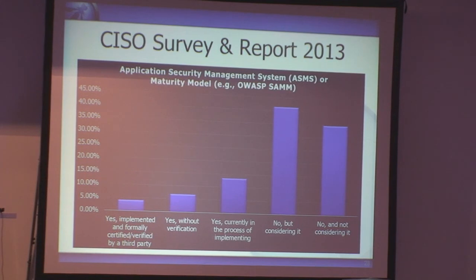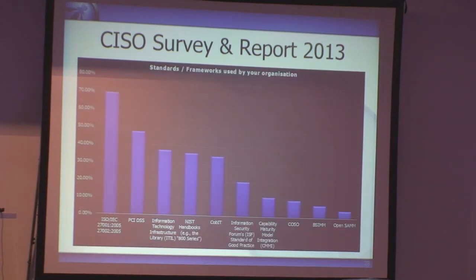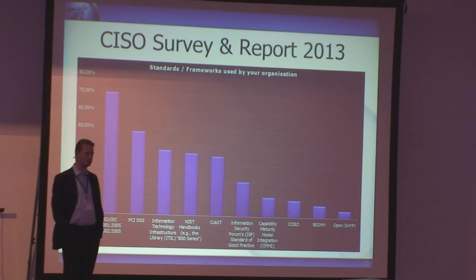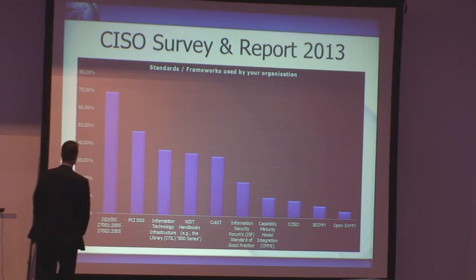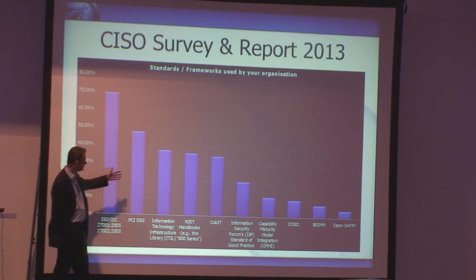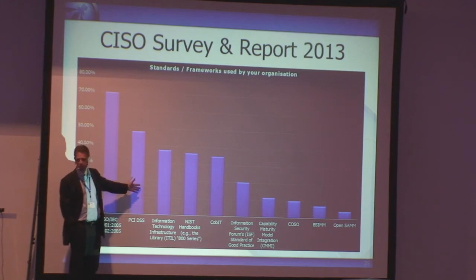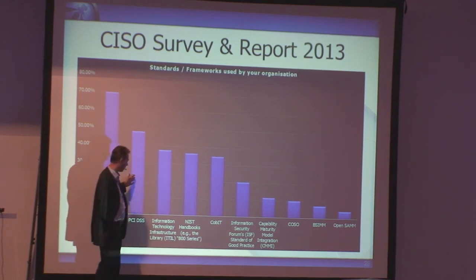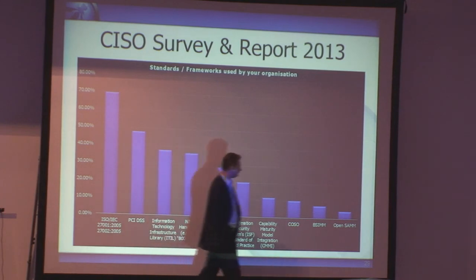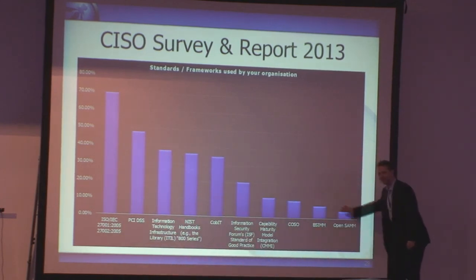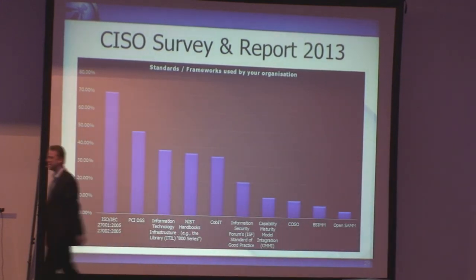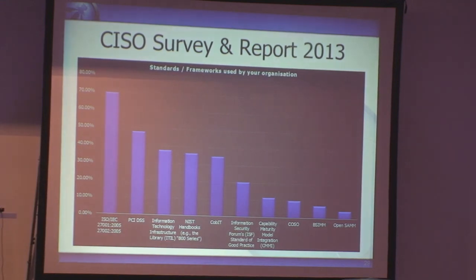What's more common is which standards people use and refer to. This is useful to understand when you talk with organizations — what requirements they will have. ISO 27001 is fairly well accepted. PCI DSS — well, most people don't have a choice. The NIST handbooks are sometimes quite good. At OWASP, we still have some room to grow.